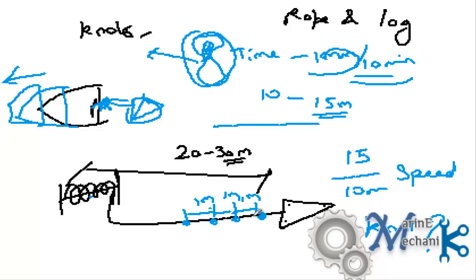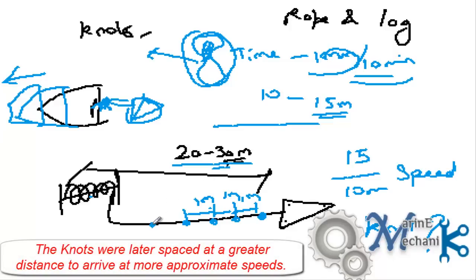So every 1 meter on the entire length of rope, let's say 20 to 30 meters, they had a knot. And simply, they just started the sand clock and threw the log again as I stated before and then counted the number of knots moving out of the ship from the bobbin. Thus, the term knot came into existence.